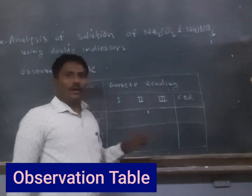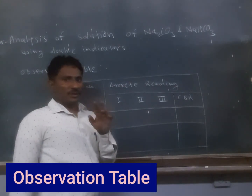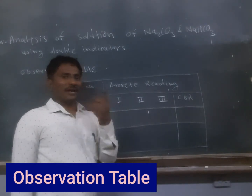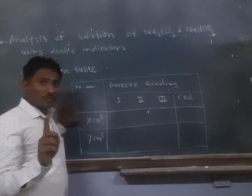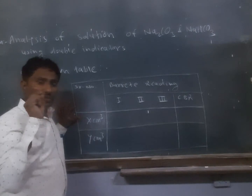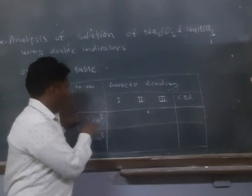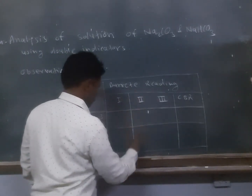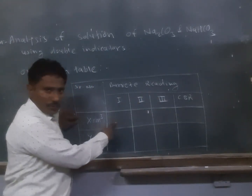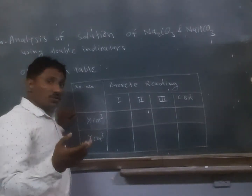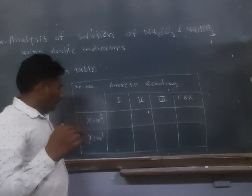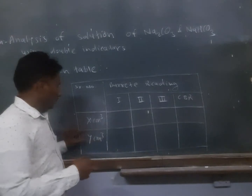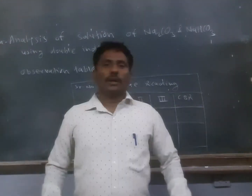In the observation table, we are doing two titrations simultaneously — first with sodium carbonate and second with sodium bicarbonate. The first half neutralization point, from sodium carbonate to sodium bicarbonate, is indicated as X cm³, and the complete neutralization point, from sodium bicarbonate to NaCl plus water plus CO₂, is Y cm³.